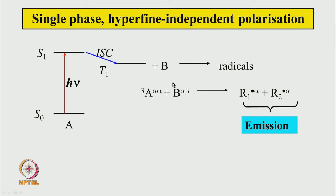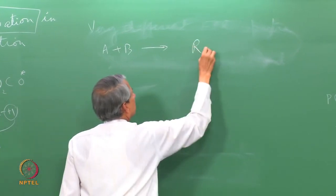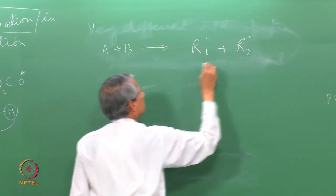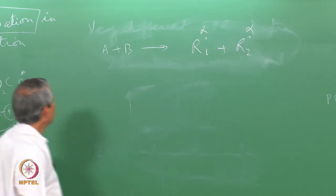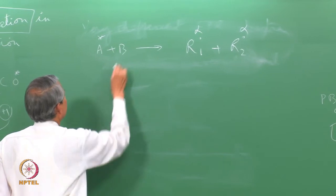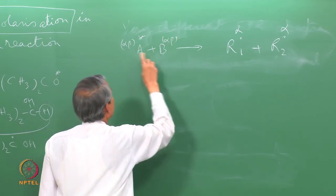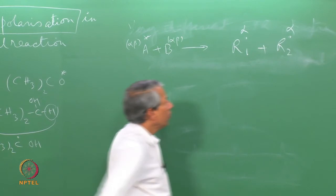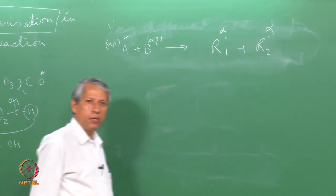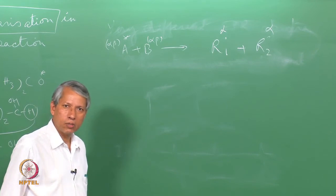Going back one step: molecule A absorbs light and goes to excited singlet state S1. Our observation is that both radicals have alpha spin state. If the reaction takes place from the singlet excited state — where all spins are paired — it just cannot produce a pair of radicals with parallel spin. Therefore, the singlet state cannot react to produce this result. That is an important conclusion one can draw immediately.